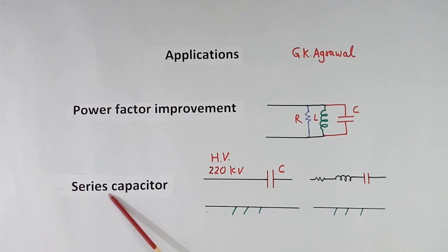Another application is series capacitor. This is also called series compensator. What happens? Power transmission is done using high voltage line, may be 220 KV. There will be 3 lines. I have shown only one because transmission will be done using 3 phase.